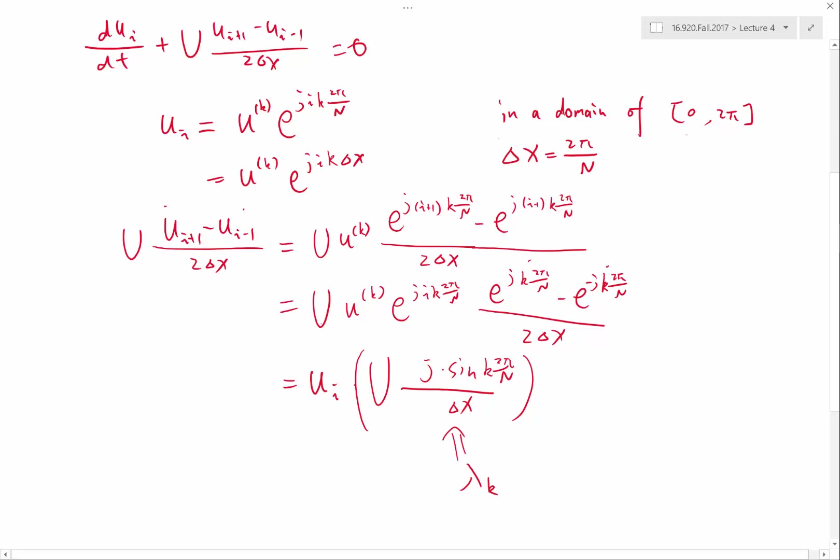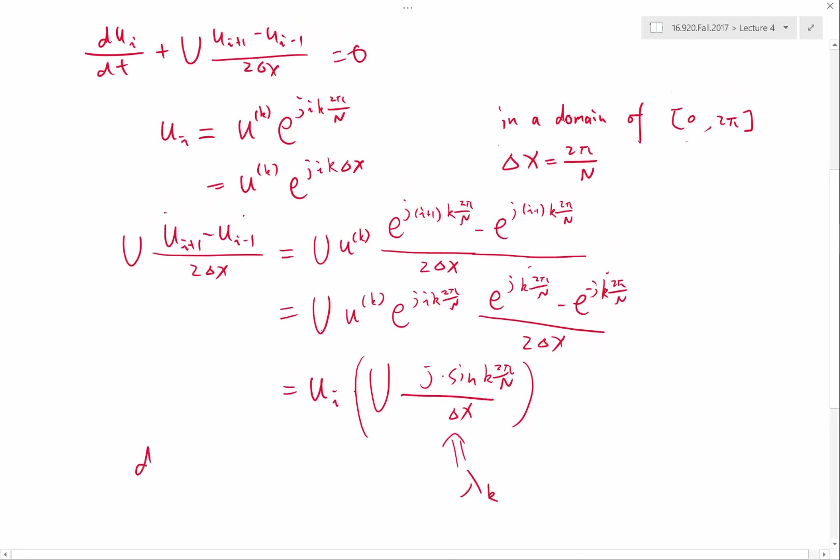So now, who can tell me, is this stable or not? If I have an exact ODE solver, I would be solving dU_i/dt equal to this particular lambda_k times U_i. If U_i is a sinusoidal wave of wave number k. Is this a stable spatial discretization?